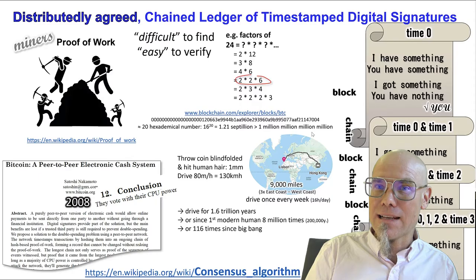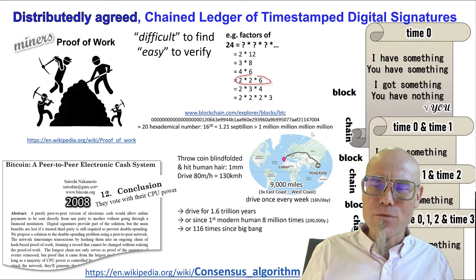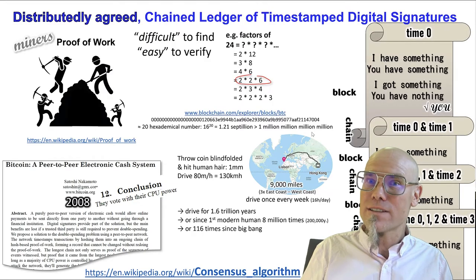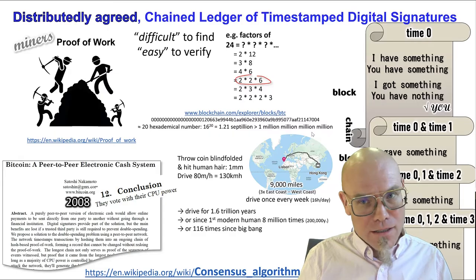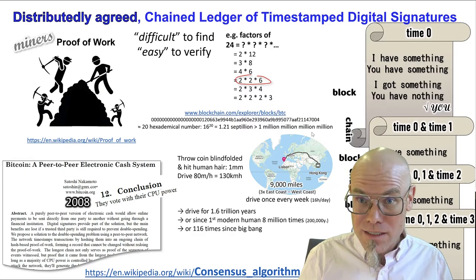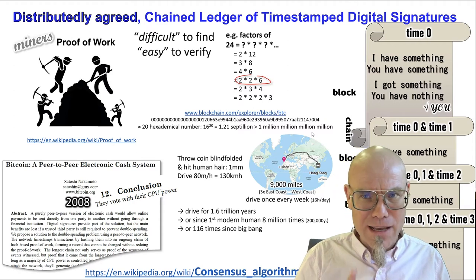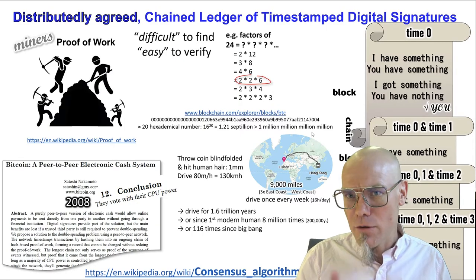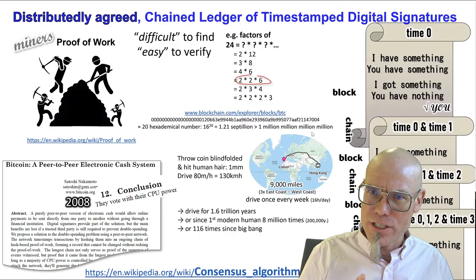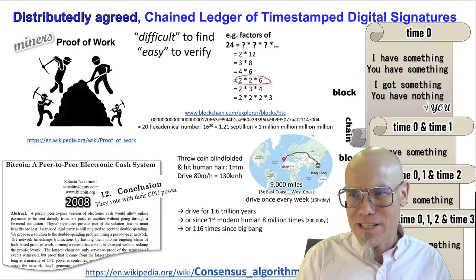That is very unlikely — not impossible. When mathematicians say 'impractical' or 'infeasible,' for all practical purposes it's impossible. You might drive since the Big Bang 116 times and hit that hair blindfolded — good for you — but you know what I mean. We actually adjust the difficulty level on the blockchain to make it work so that somebody solves it at least once every 10 minutes or so.